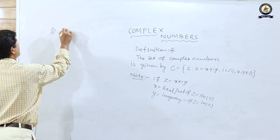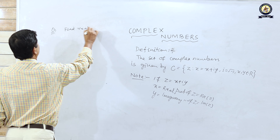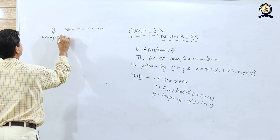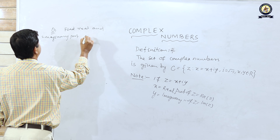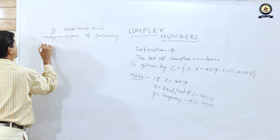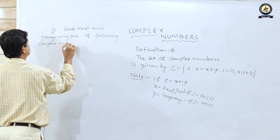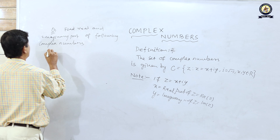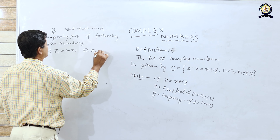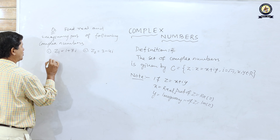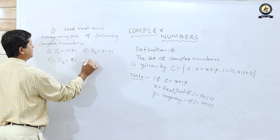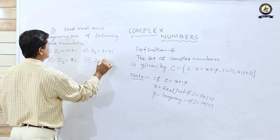Now let us come to some questions. Find the real and imaginary parts of the following complex numbers: z1 = 1 + 7i, z2 = 3 − 4i, z3 = 8i, z4 = 5.